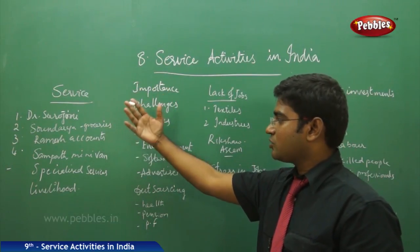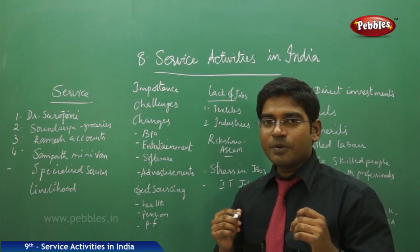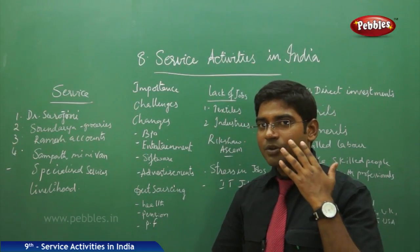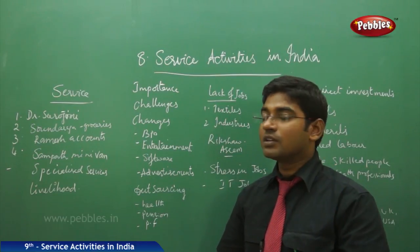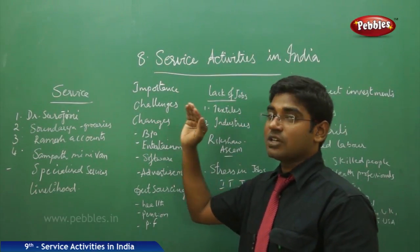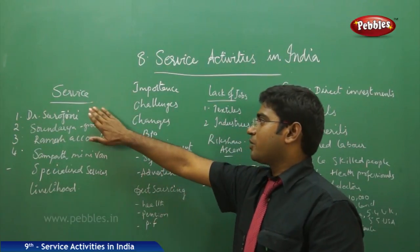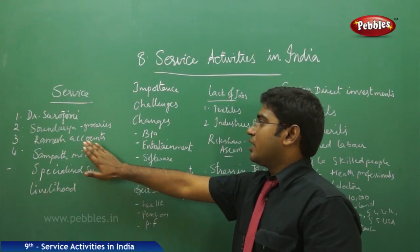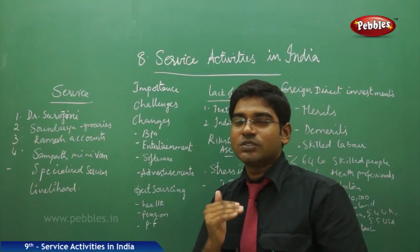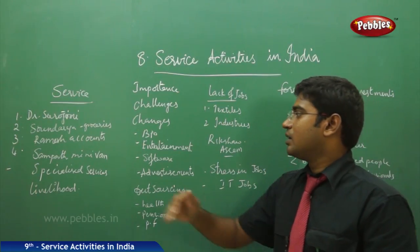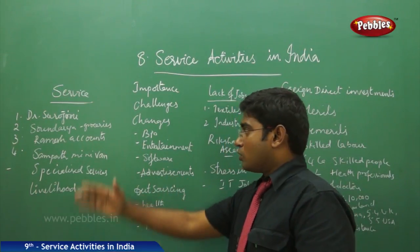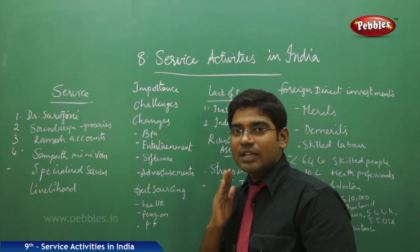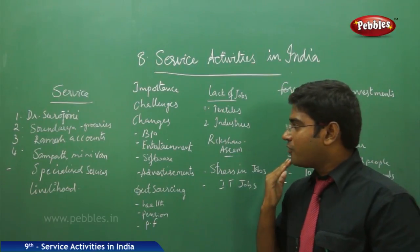Neither Sarojini, nor Soundarya, nor Ramesh, nor Sampath produces any product. They are not doing any farming or producing any industrial product. But they are doing services which are useful for us: Sarojini provides medical services, Soundarya provides grocery items, Ramesh maintains records required in offices, and Sampath provides transportation facilities. All of these fall under the service sector.